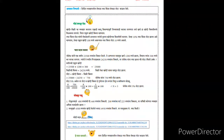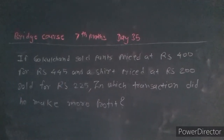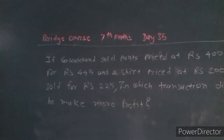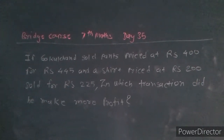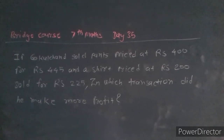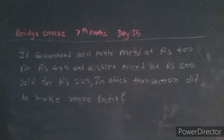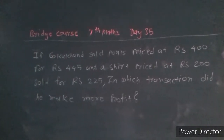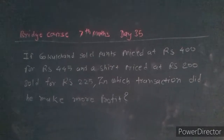So let's start now. A pant was bought at Rs 400 and sold for Rs 445, and a shirt was bought at Rs 200 and sold for Rs 225. In which transaction did he make more profit?